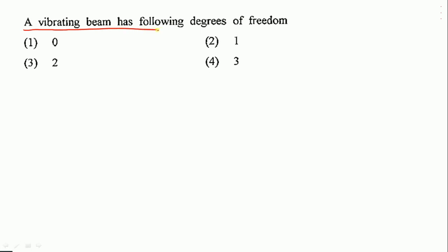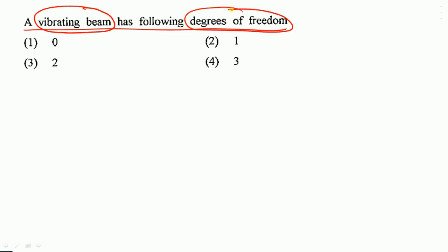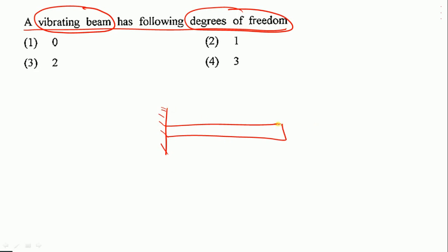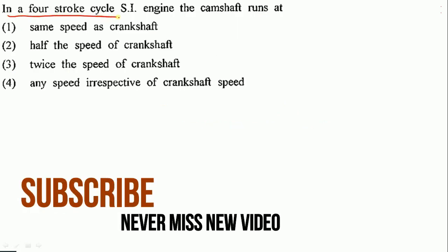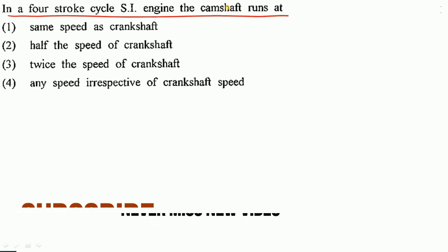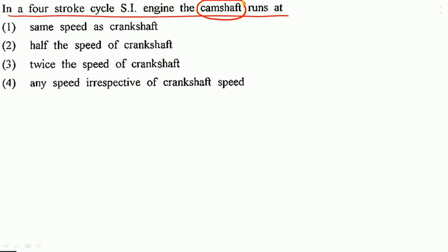A vibrating beam has how many degrees of freedom? Assuming this is a beam, the degrees of freedom refer to the number of ways it can oscillate. Since we cannot consider a beam for axial loading, the correct answer is 2 degrees of freedom.